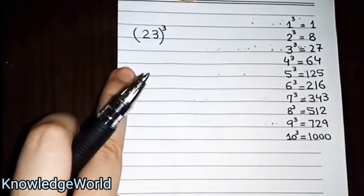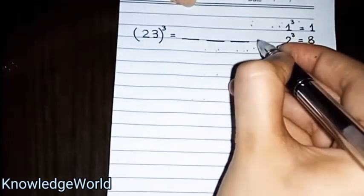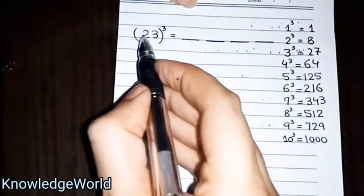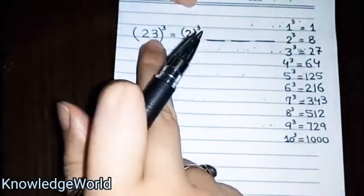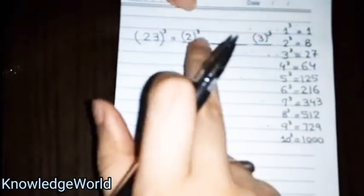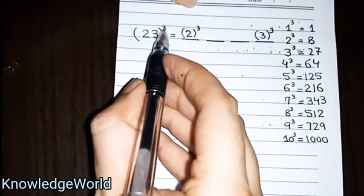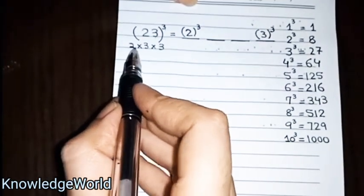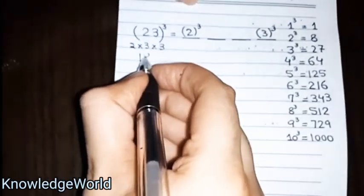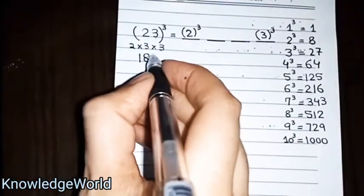You want to find the cube of 23. Draw 4 lines. In the first line, write the cube of the first number. In the last line, write the cube of the last number. In the middle, you have to multiply by 3. So you have 8, 36, 54, and 27.